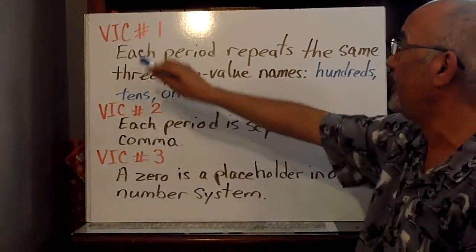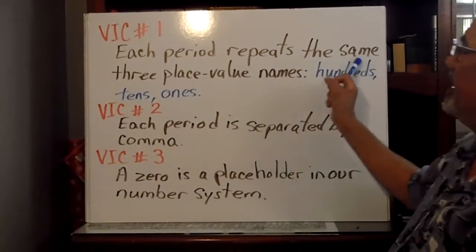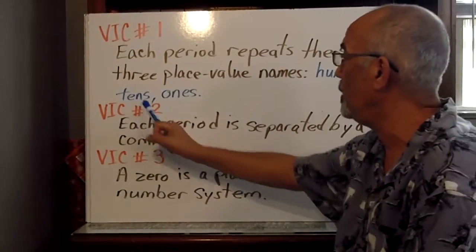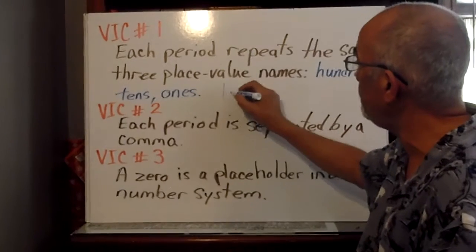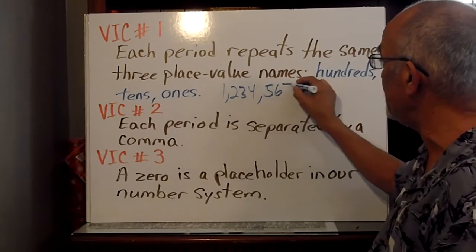One very important concept that we need you to learn is each period repeats the same three place value names: hundreds, tens, and ones. For example, again, one million, two hundred thirty-four thousand, five hundred and sixty-seven.